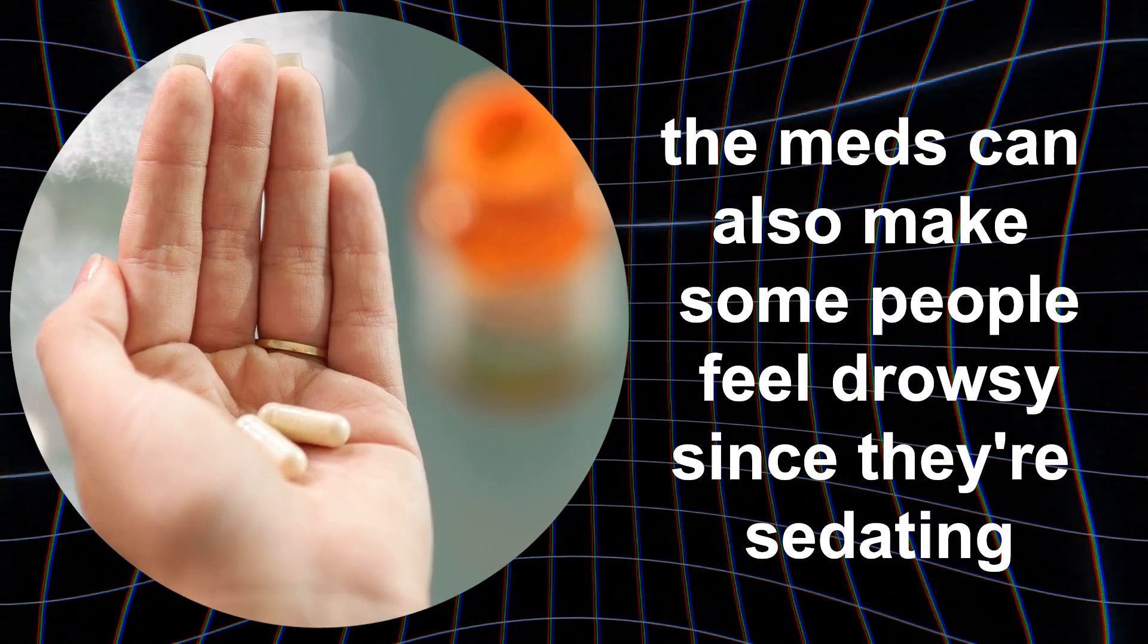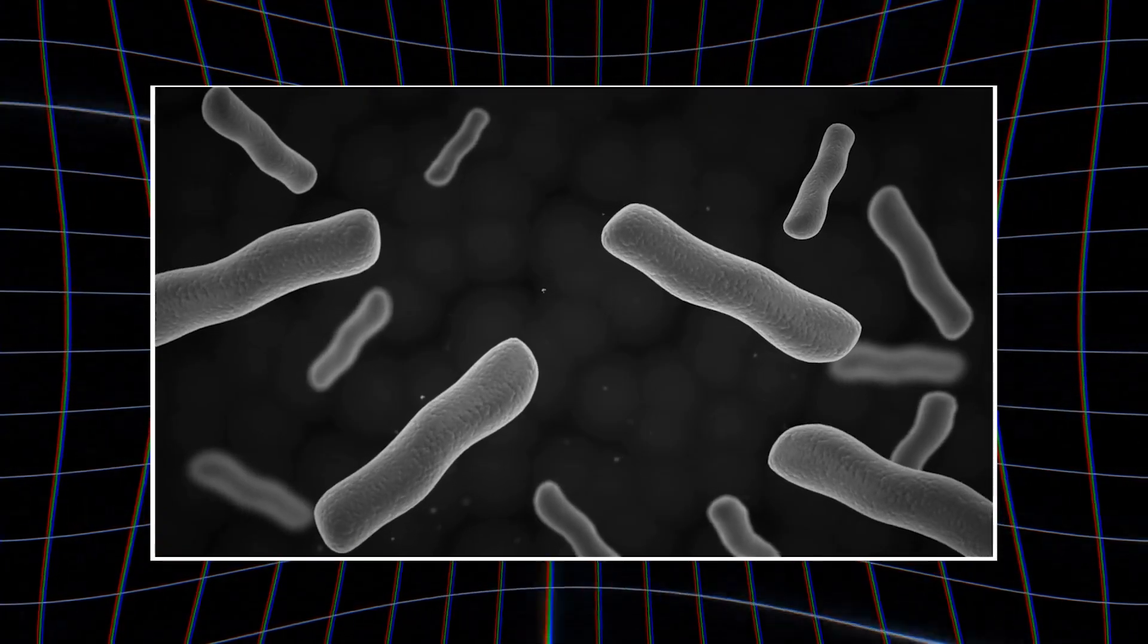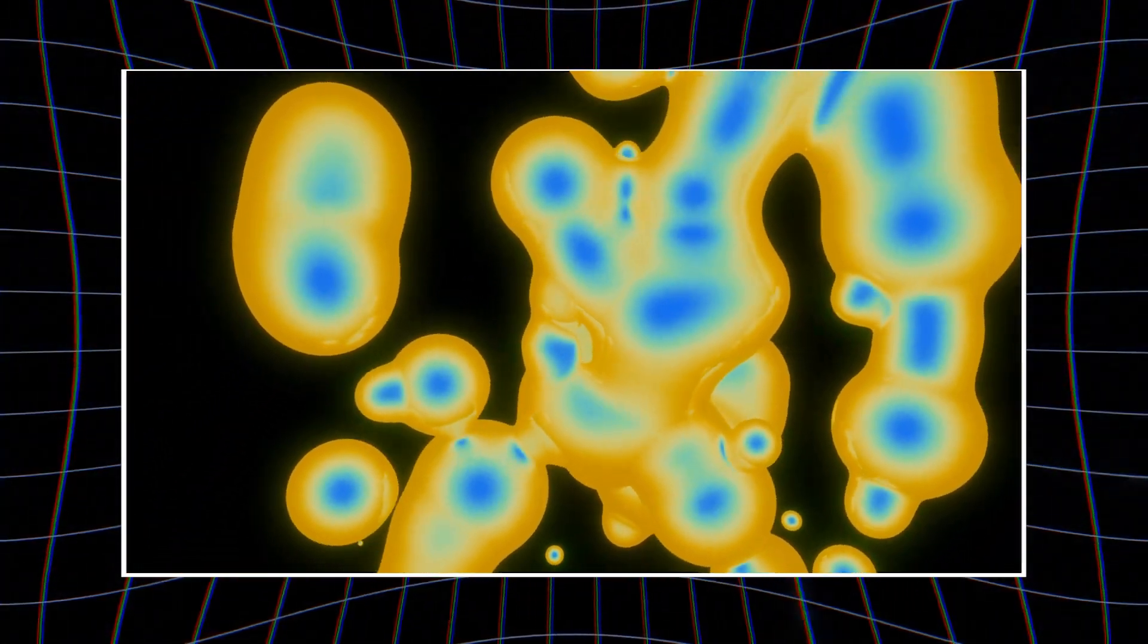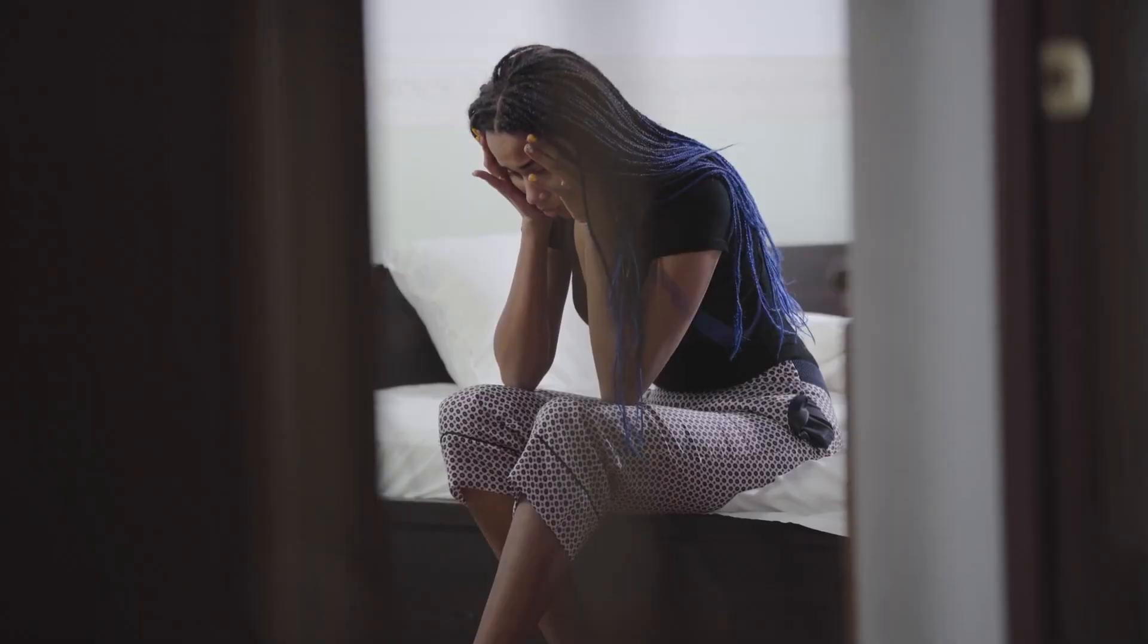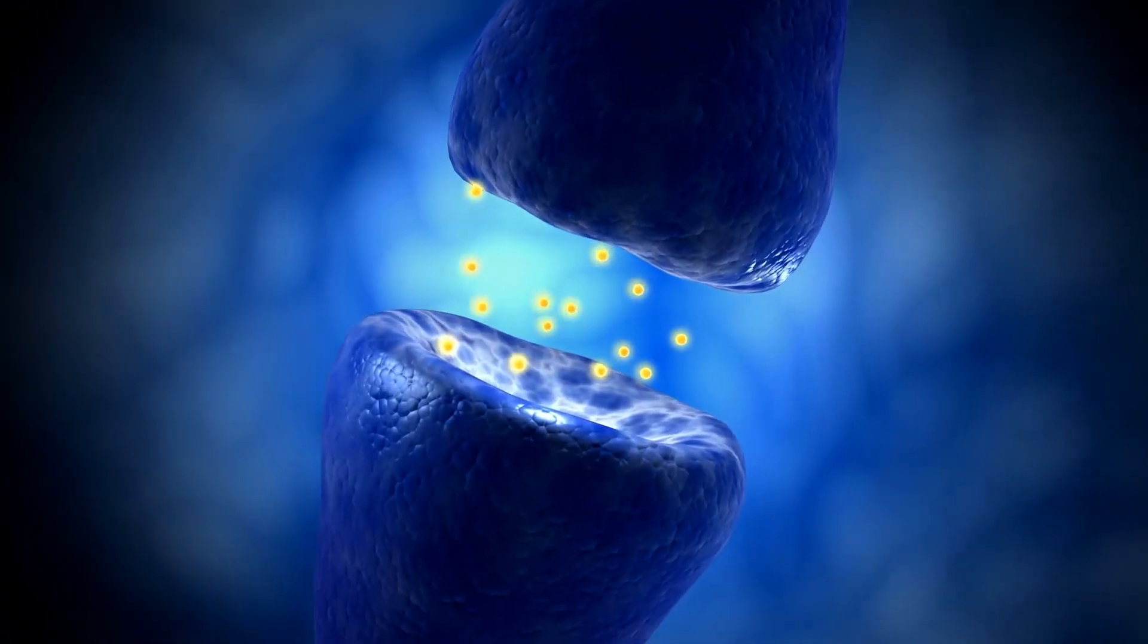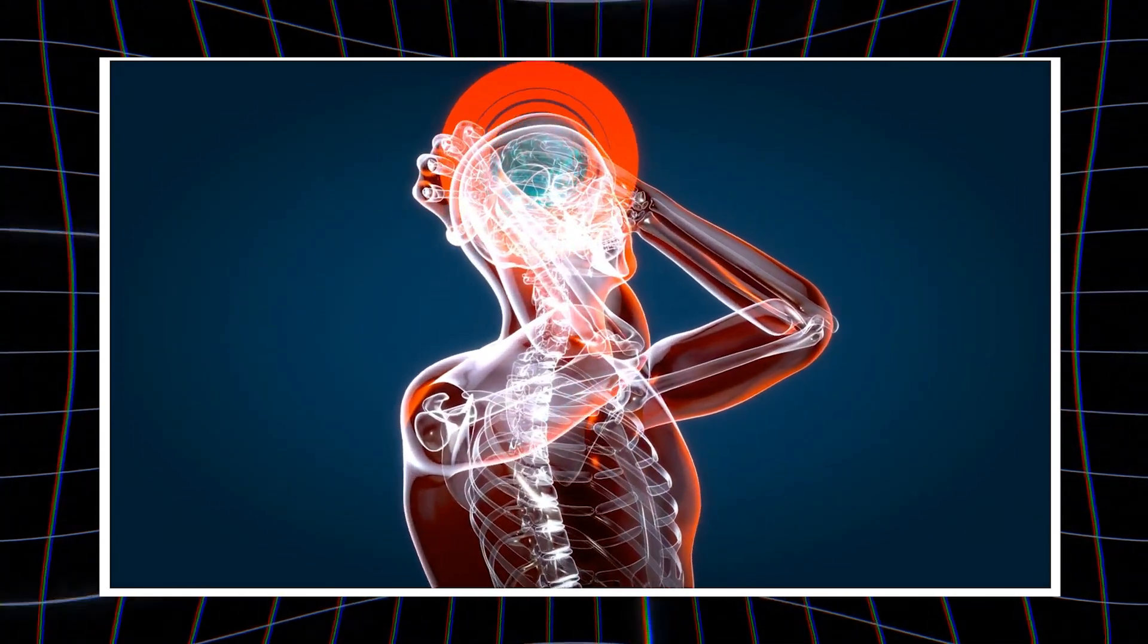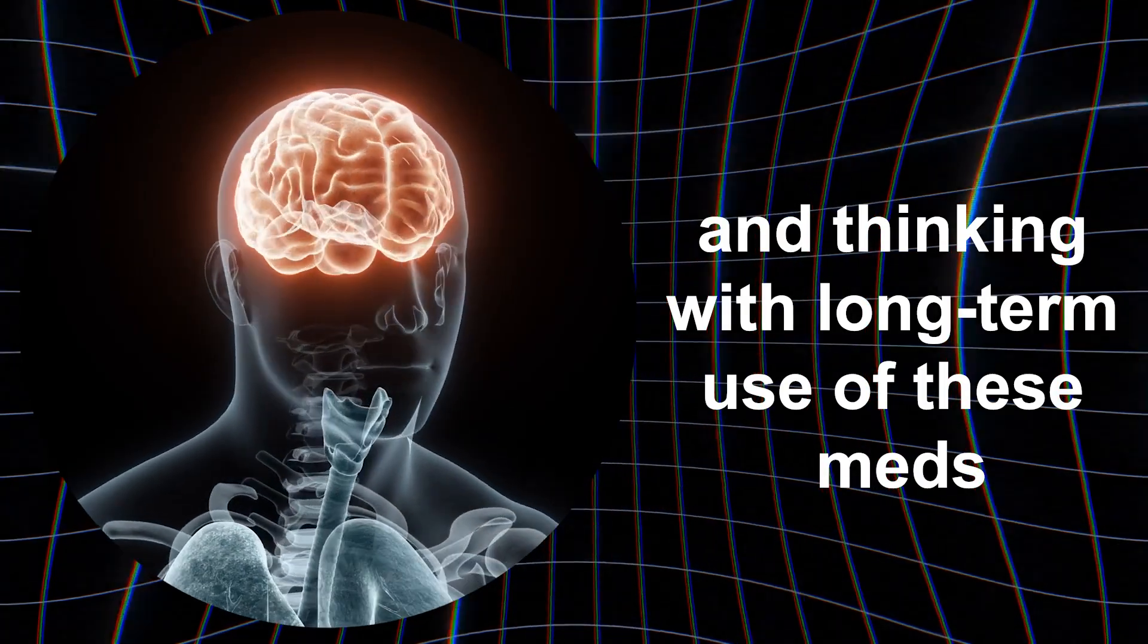On top of that, the meds can also make some people feel drowsy since they're sedating. If someone feels a bit foggy-headed for a long time, it can be harder for them to think quickly and for their brain to stay sharp. And TCAs affect lots of different brain chemicals that help regulate mood, not just serotonin and norepinephrine. While that helps with depression, it may muddle up other brain processes that keep your cognition humming along the way it should. The cognitive effects can be especially strong in older folks. Their brains change over time anyway, and their body handles drugs differently.